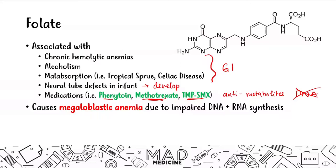All of these causes lead to megaloblastic anemia simply because you have impaired DNA and RNA synthesis. Remember, folate is very important for DNA and RNA synthesis. If you destroy your stores or don't have enough absorption and run out of folate, that's going to lead to impaired DNA and RNA synthesis — your body isn't going to be able to synthesize them.